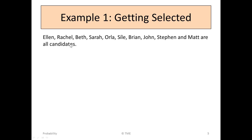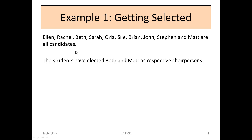So these are the people that we have: Ellen, Rachel, Beth, Sarah, Orla, Sheila, Brian, John, Stephen and Matt. They're all candidates. And we're told that they've elected Beth and Matt as chairpersons, so we can eliminate Beth and Matt from further calculations.